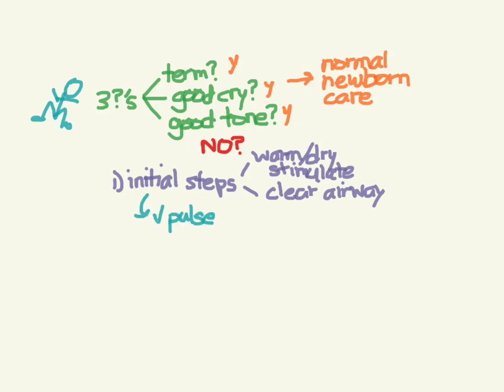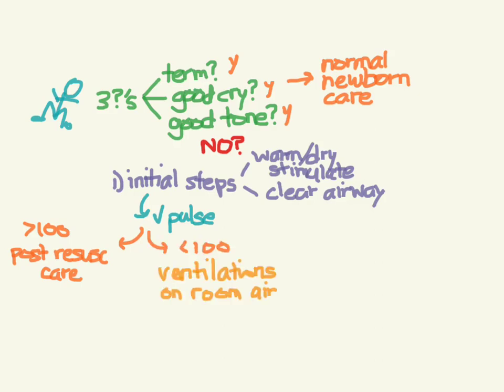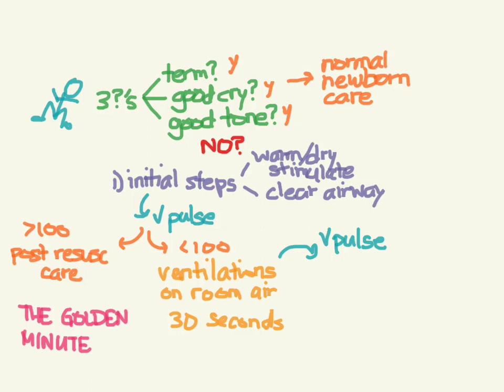Next, check pulse. If the pulse is over 100, that's great. But if the pulse is less than 100, you're going to initiate ventilations with the bag valve mask on room air. All of these steps should take you less than a minute. In trauma we have the golden hour; here we have a golden minute. You're going to give those ventilations for about 30 seconds and then check a pulse again. So now we're at about 90 seconds.